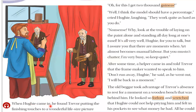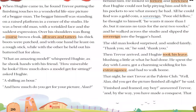Now let's read the next page. When Hughie came in, he found Trevor putting the finishing touches to a wonderful life-size picture of a beggar man. The beggar himself was standing on a raised platform in a corner of the studio.